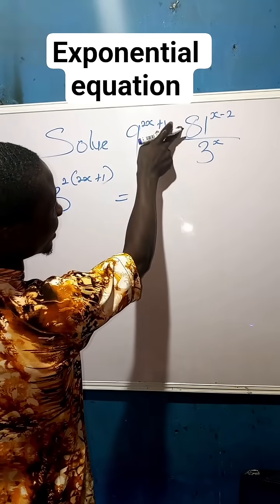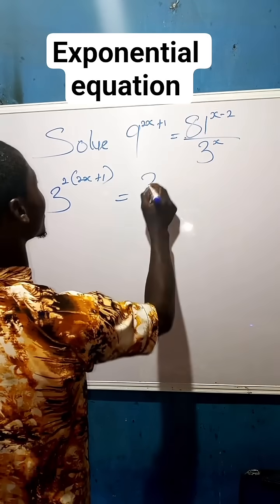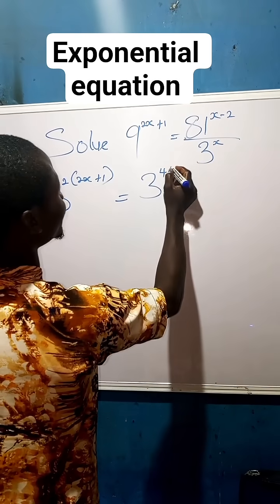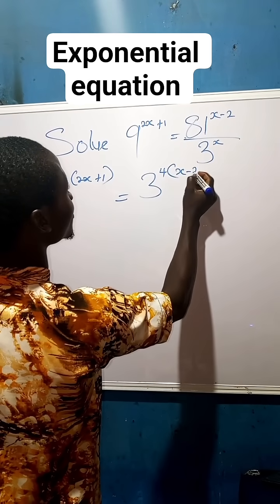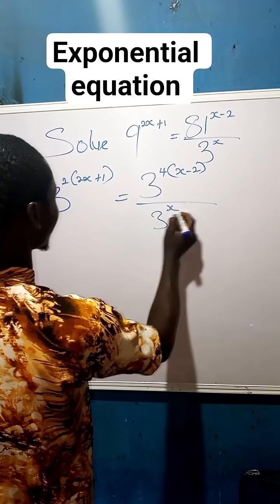Then equals to, rather than using 81, we can use 3 to the power of 4, then multiply by x minus 2. Then all over 3 to the power of x.